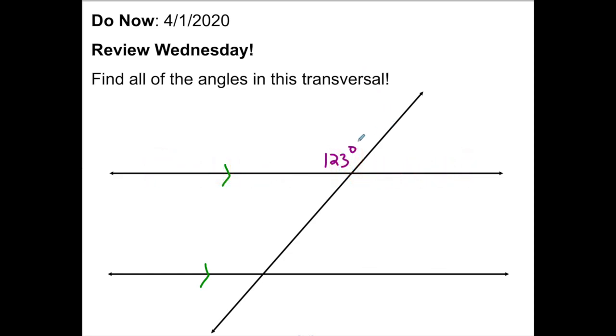Alright, here we go. So if this is 123 degrees here, this needs to be 123 degrees because these are what we call vertical angles. Vertical angles are always congruent.